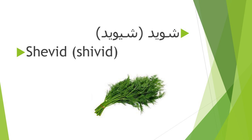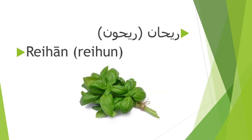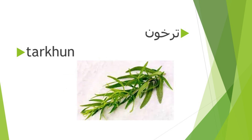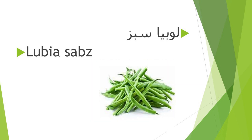شوید (shevid - dill), or in spoken Persian شوید. ریحان (reyhaan - basil), in spoken Persian ریحون. تره (tarre - chives). ترخون (tarkhon - tarragon).